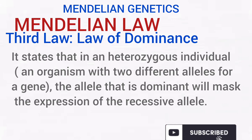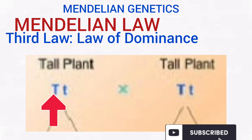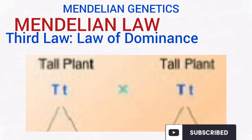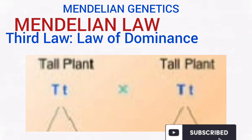Let's talk about the third law of Mendel — the law of dominance. It states that in a heterozygous individual, that is an individual with two different alleles for a particular gene, the allele that is dominant will mask the expression of the other, which is recessive. Looking at this diagram, you can see a tall plant which actually possesses a short gene — small letter t. Because of the capital letter T, which is the dominant allele, it is being expressed and masking the other. So capital letter T is dominant while small letter t is recessive. This plant is tall because only capital letter T is actually being expressed. That is the law of dominance.